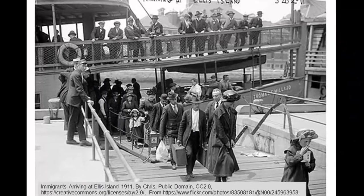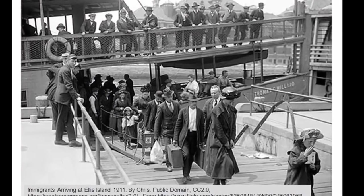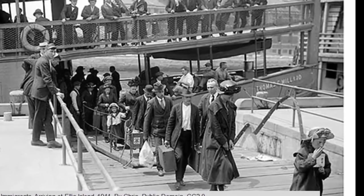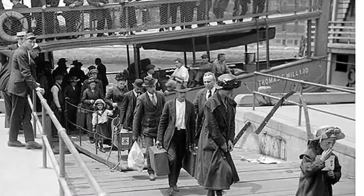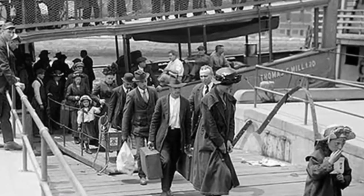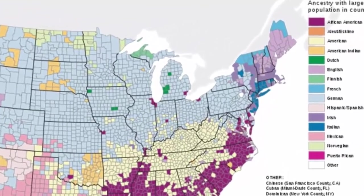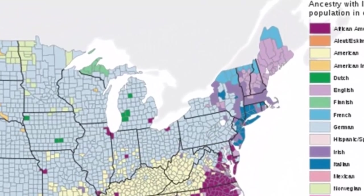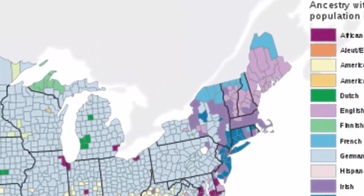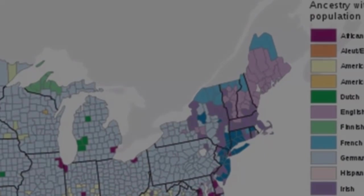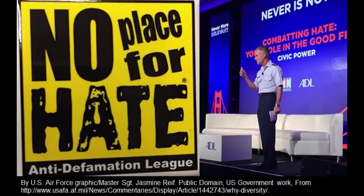America is truly a nation of immigrants. Less than 1% of our population is American Indian — everyone else's families came from some other country at some point. In fact, one of the early objections to the U.S. entering World War I was that too many of our soldiers would be fighting against the countries their families came from. Because of this, U.S. citizens have a responsibility to respect each other's rights, beliefs, and opinions, whether we agree with them or not.